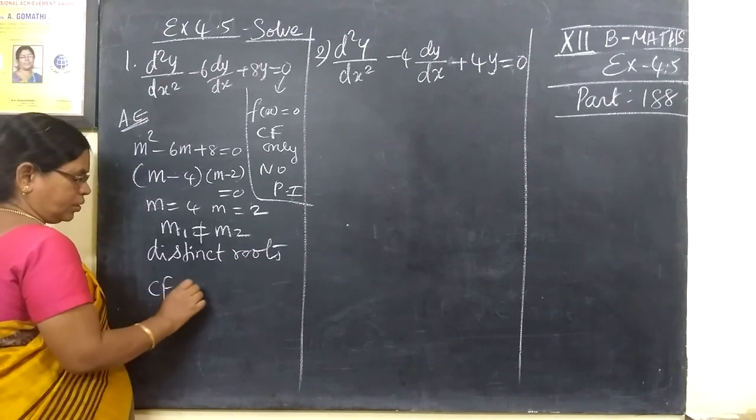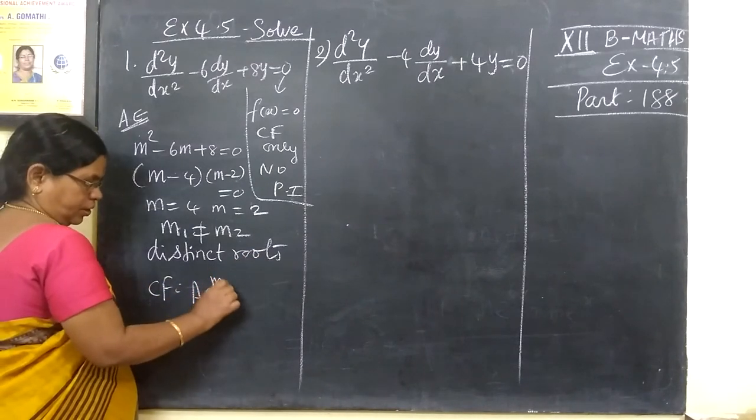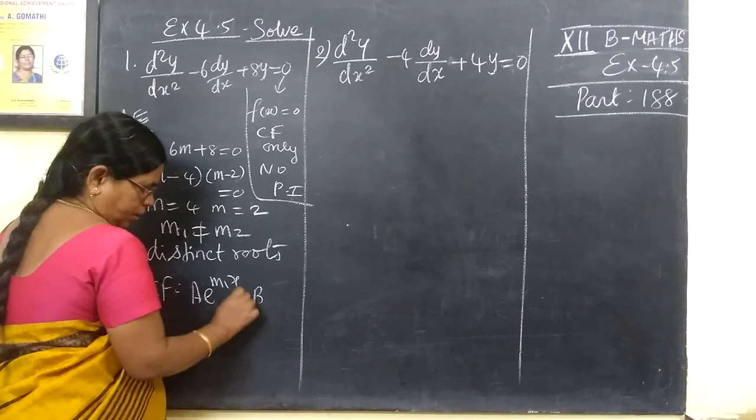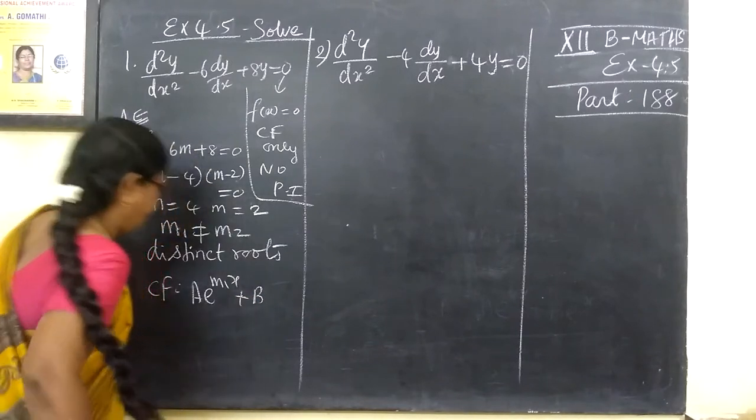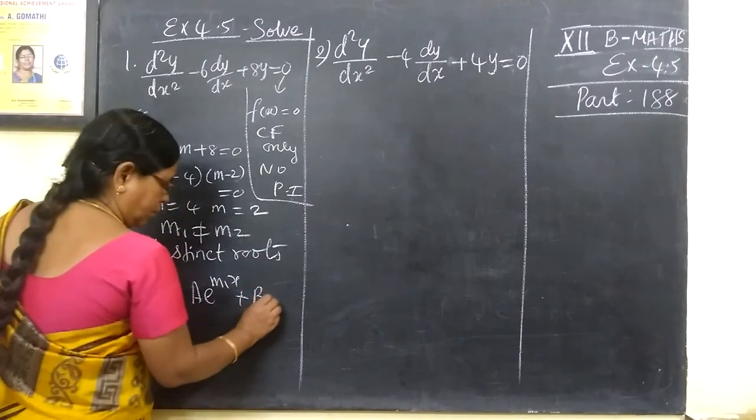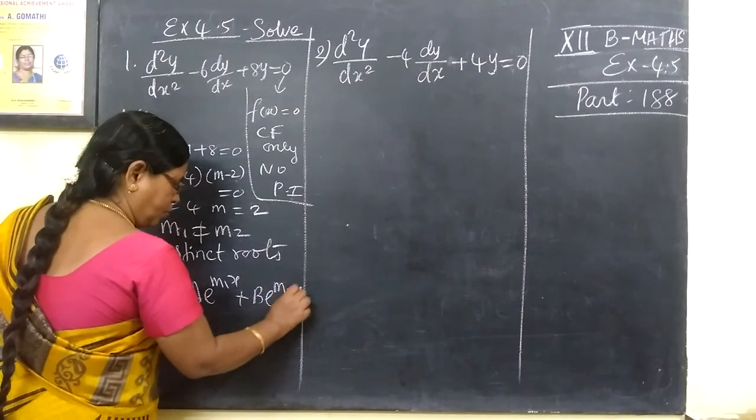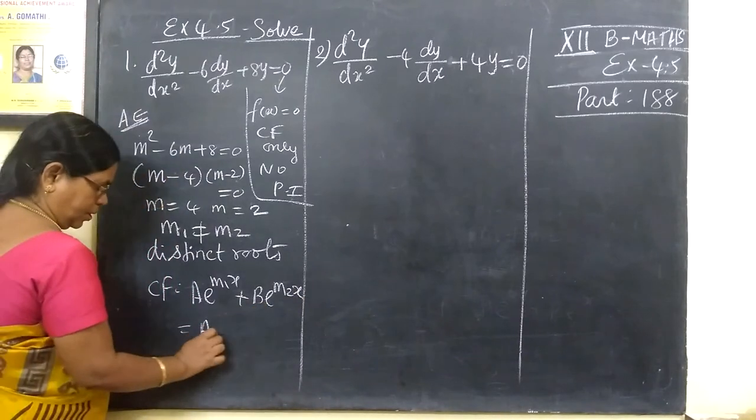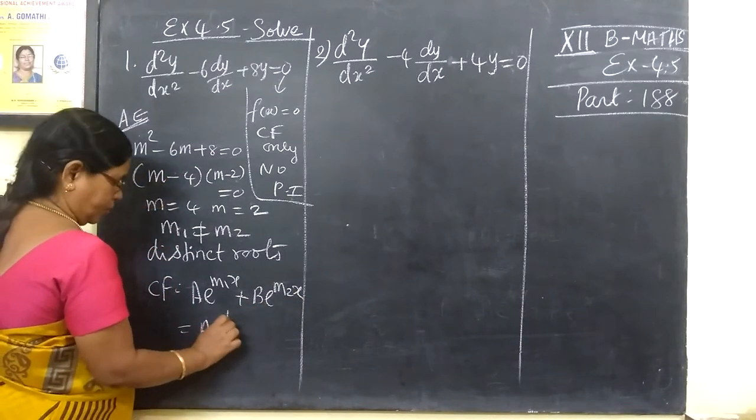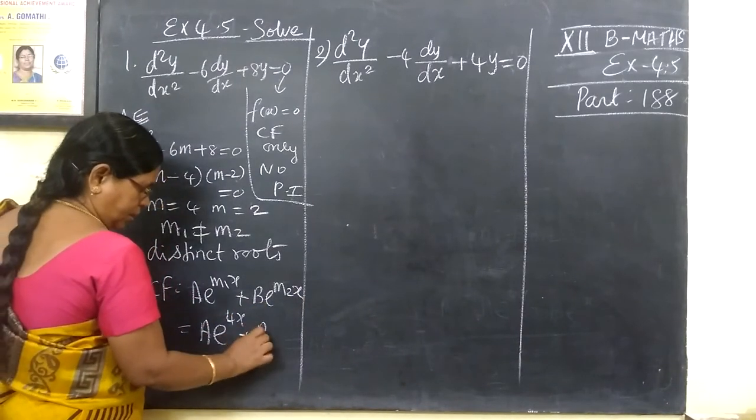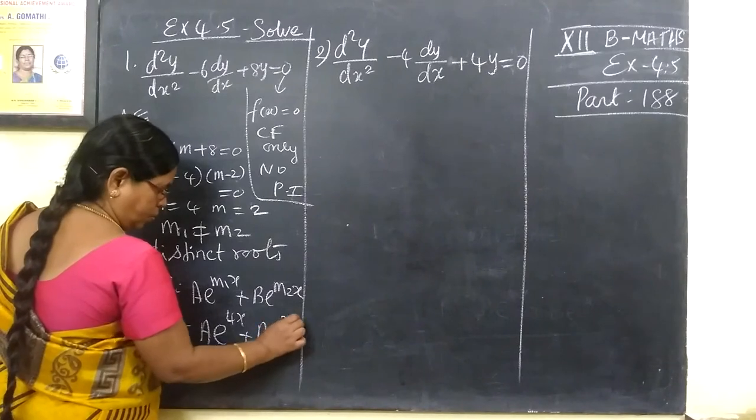Now, CF equals a e power m1x plus b e power m2x. Equal to a e power 4x plus b e power 2x.